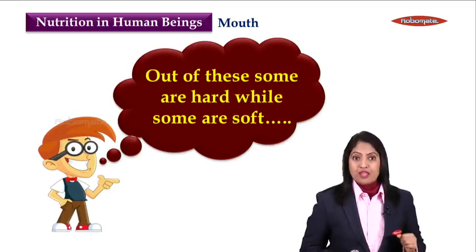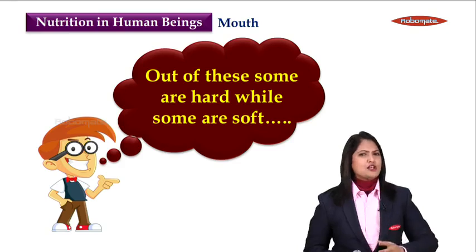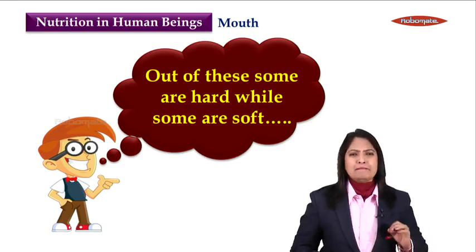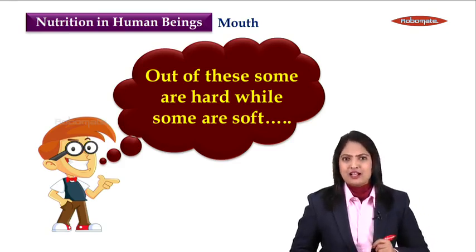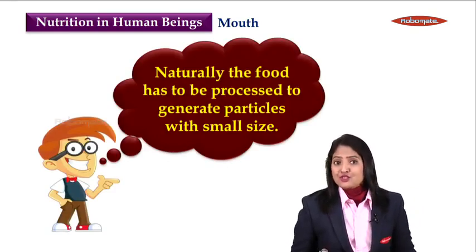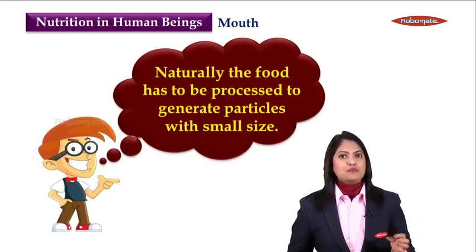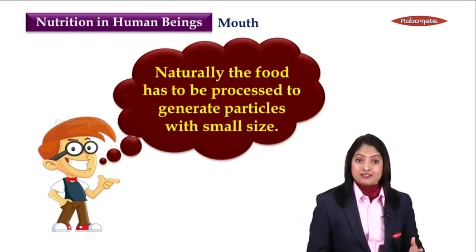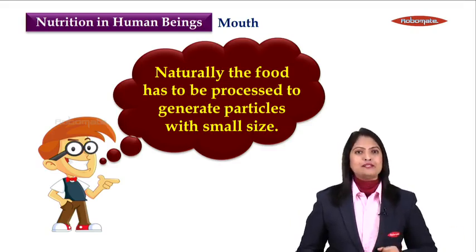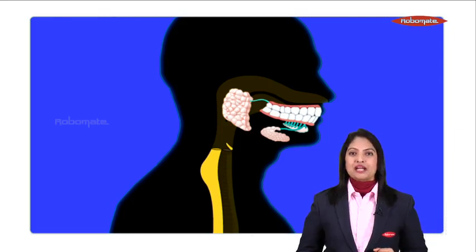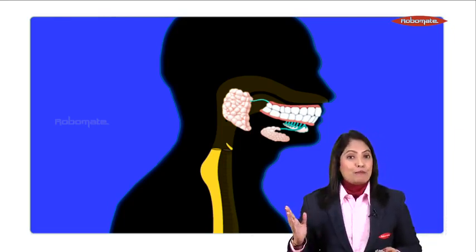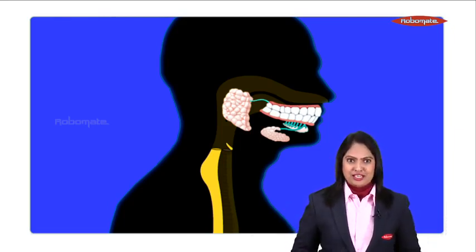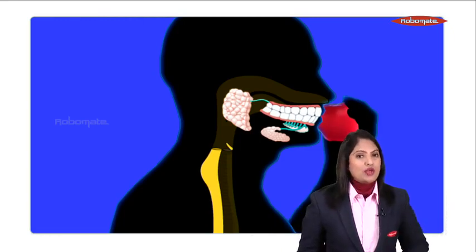The hard ones may cause damage to our highly muscular alimentary canal. So then naturally, the food has to be first processed to generate particles with small size. Let's see how does this happen in the mouth. Now we begin with the process of nutrition in the mouth. We all know we eat food in the form of tiny morsels, in the form of tiny bites.